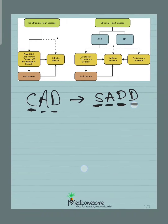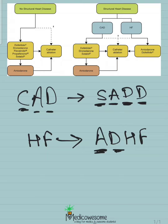For heart failure, I remember the phrase 'acute decompensated heart failure.' That helps me remember A for amiodarone and DF for dofetilide — since there are two drugs starting with D, dronedarone and dofetilide, DF specifically helps me remember dofetilide. So: acute decompensated heart failure → amiodarone and dofetilide.